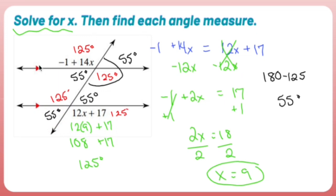So when you're given parallel lines and asked to find angle measures, it's either going to be one angle and its supplement that add up to 180. Whatever angle you come up with, three other angles are going to be the exact same thing, and vice versa with the supplementary angles.